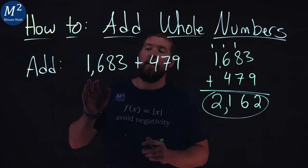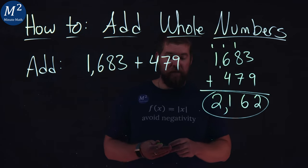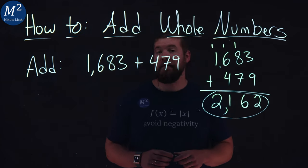Our final answer for 1,683 plus 479 is 2,162.